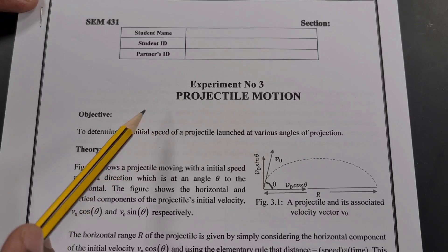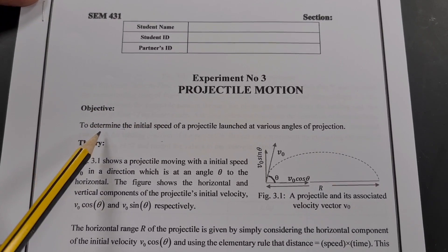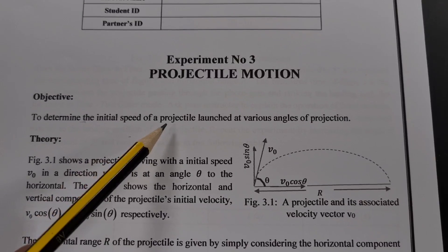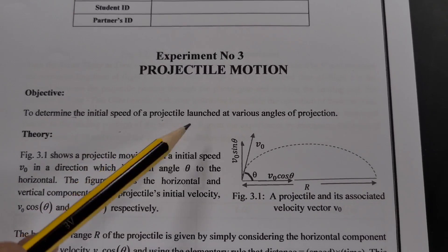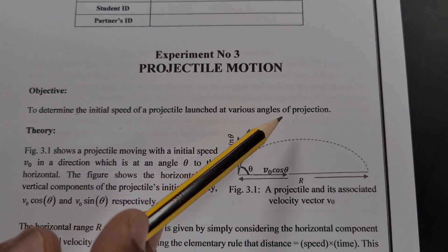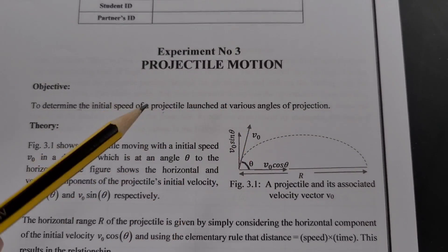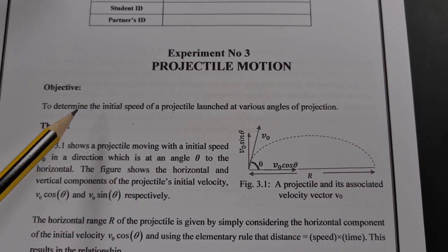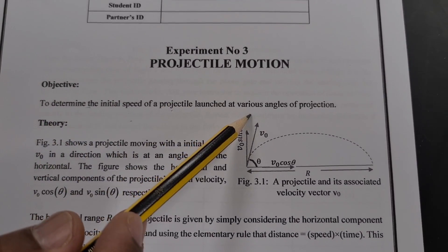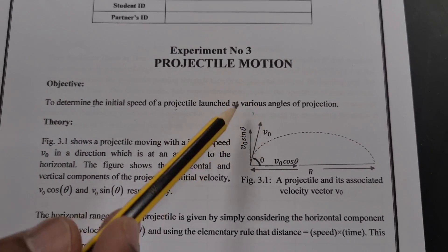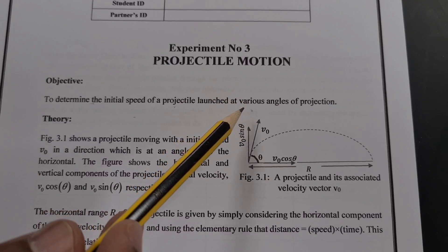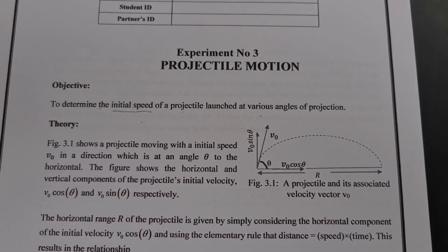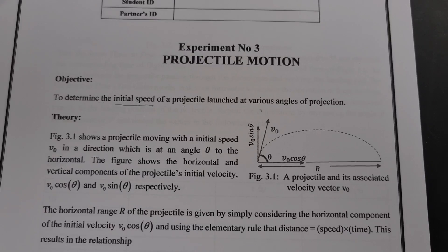The objective of today's experiment is to find the initial speed of a projectile launched at various angles of projection. We are going to launch the projectile at different angles, and from that we can easily find the initial speed.